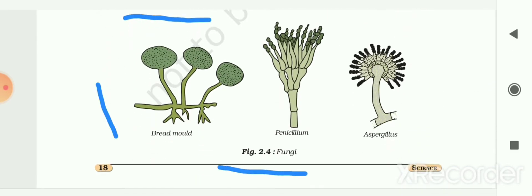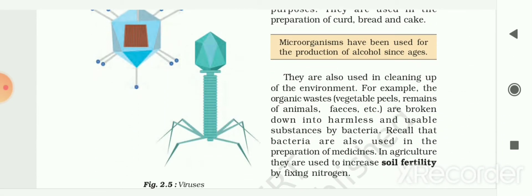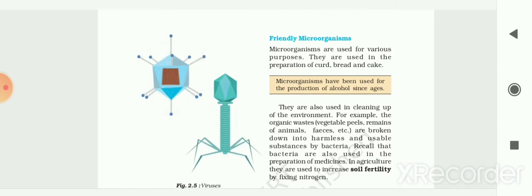Next, different types of fungi are shown: bread mold, penicillium, and aspergillus. These are the different types of fungi. And then two different types of viruses are also shown.